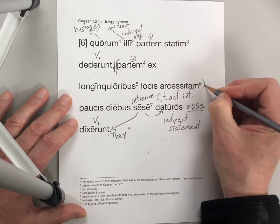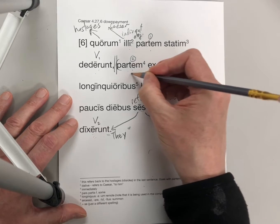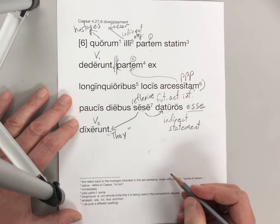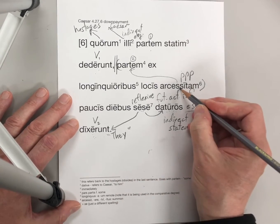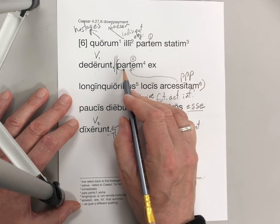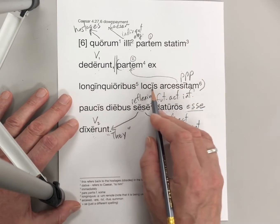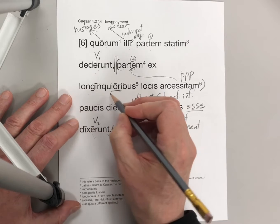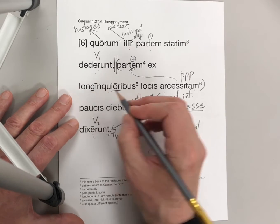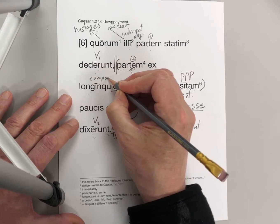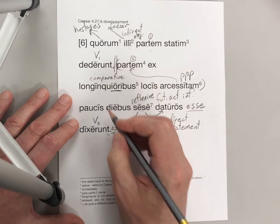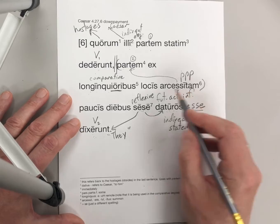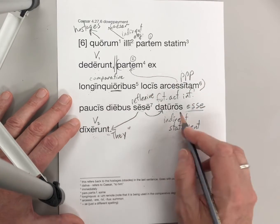This is kind of a nice bracketing here. This modifies partem, and this is a PPP — perfect passive participle. This verb means to summon. So: part of them, summoned from further away places. Notice the comparative there — the adjective is longinquus, which means remote, but this is the comparative ablative form of the adjective. So: more remote, or further away. Part summoned from further away places, they said they would give.